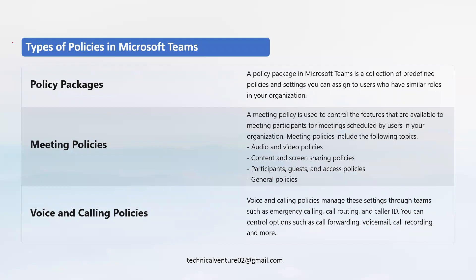Now let's look at the types of policies in Microsoft Teams. First is the policy package. A policy package is a collection of predefined policies and settings you can assign to users who have similar roles in your organization. You can create a policy package which will be a collection of all the predefined policies and settings you want to give, and then assign it to users who are in the same role.